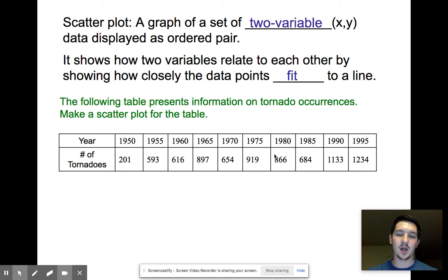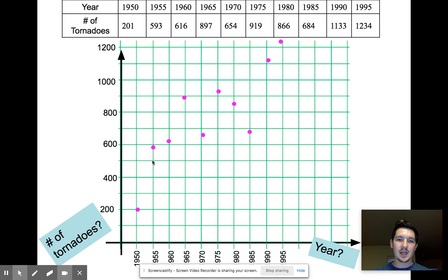The following table represents the number of tornadoes occurrences, and we're going to make a scatterplot based off the information we have. And so we get a scatterplot like this when we plot these points.